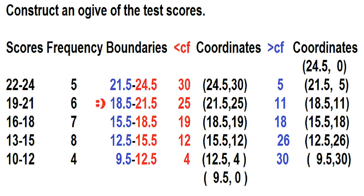How many students got scores greater than 18.5? The answer is 11. Greater than 15.5? The answer is 18. Greater than 12.5? The answer is 26. How many students got scores greater than 9.5? The answer is 30.